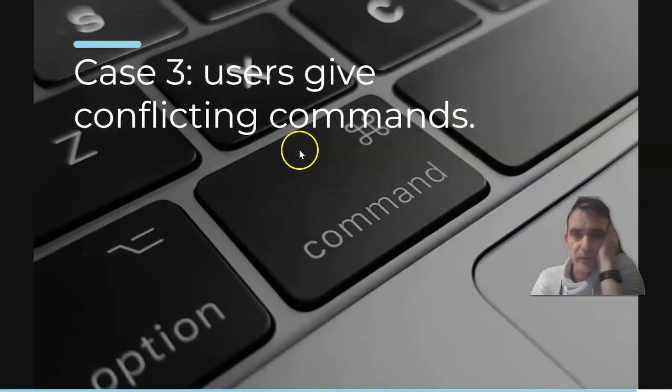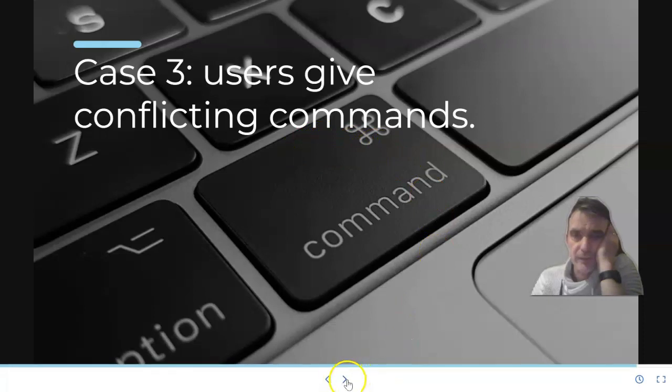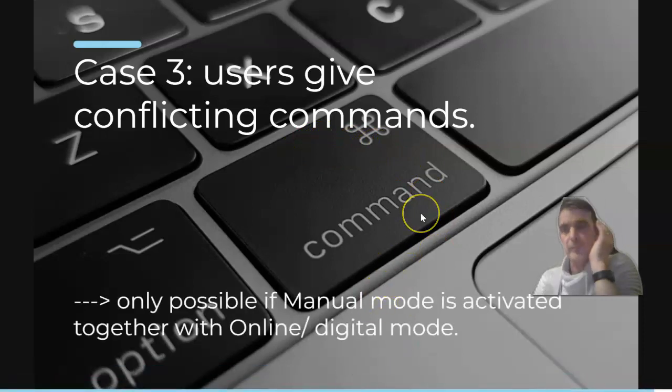Case three, users give conflicting commands. This is only possible if manual mode is activated together with online digital mode. When you have manual mode, they can put the switch on or off from the heating system, guests in the camp, while I'm from my system trying to put the heating on through the website. That should not be possible, so I should disable this option.